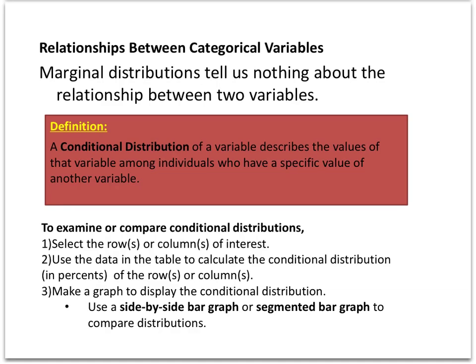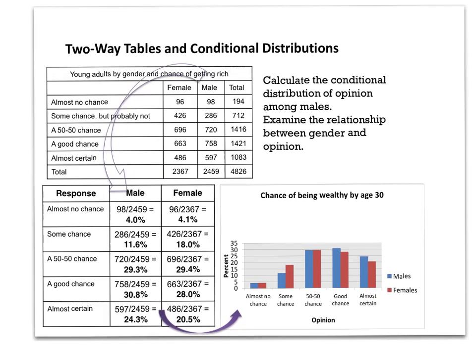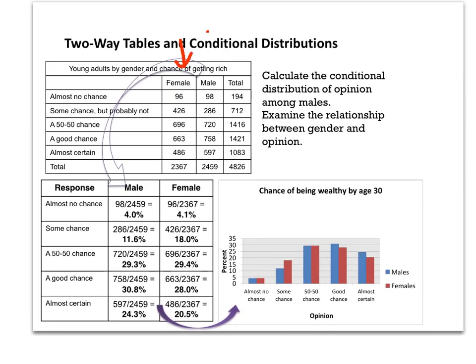Rather than looking at the totals, I'm looking at each column — females and males. For males, I calculated how many out of the total number of males: 98 divided by 2,459 came out to 4 percent for each category. I then did the same for females, calculating percentages for each category out of 2,367 females in the survey.